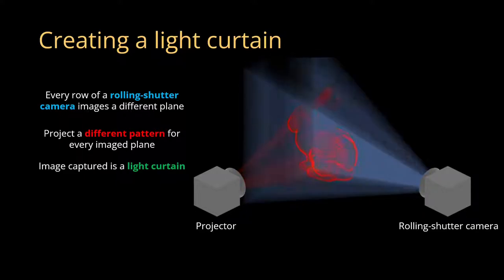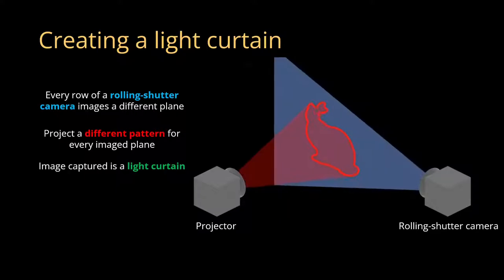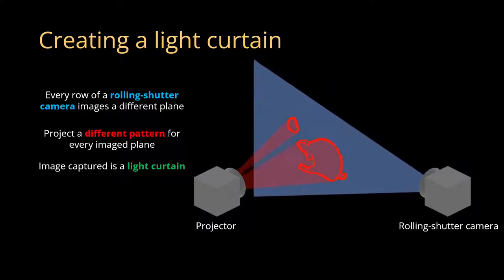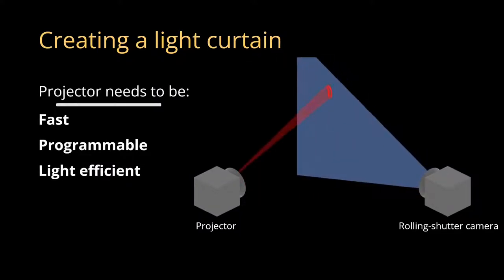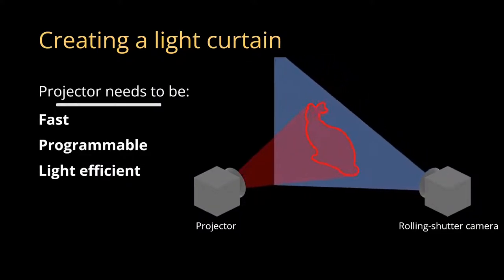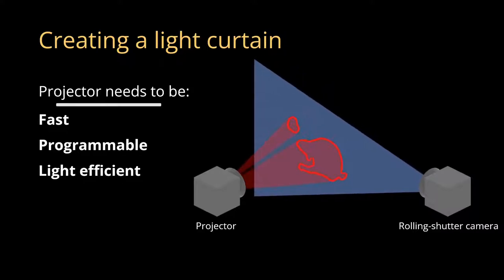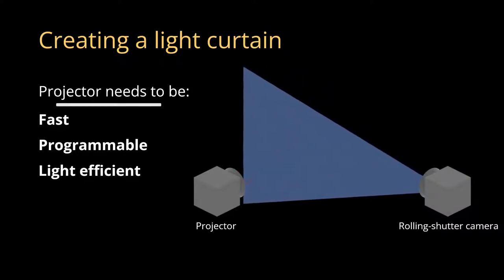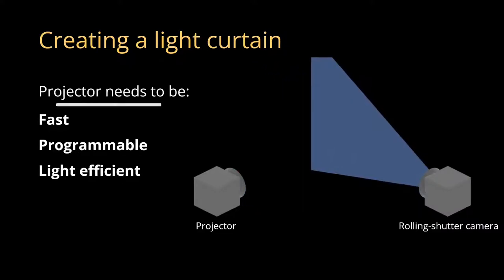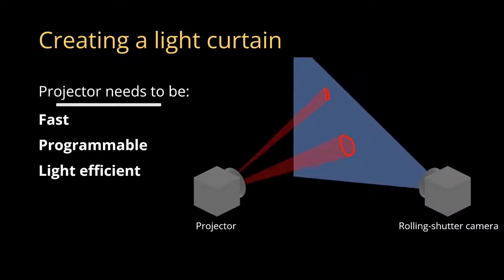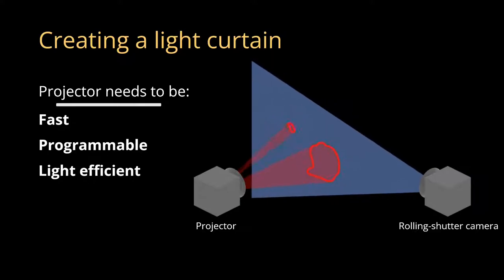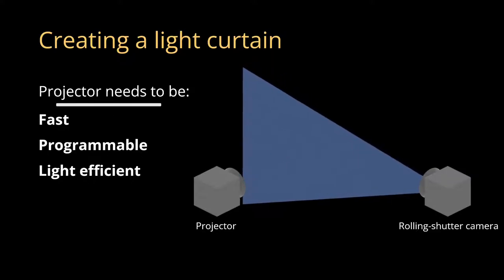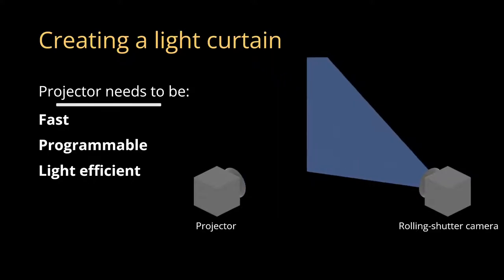Objects that intersect this light curtain will be visible to the rolling shutter camera, while objects that don't will be too dark to be seen. Such a system requires that the projector is fast, programmable, and light efficient. However, existing techniques don't really satisfy all of these requirements, so we turn to a holographic approach.